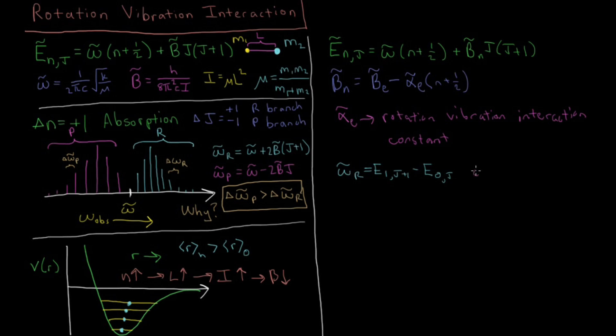And similarly for the P branch if we have ω̅ₚ, that's going from E₁ j minus one minus E₀ j.